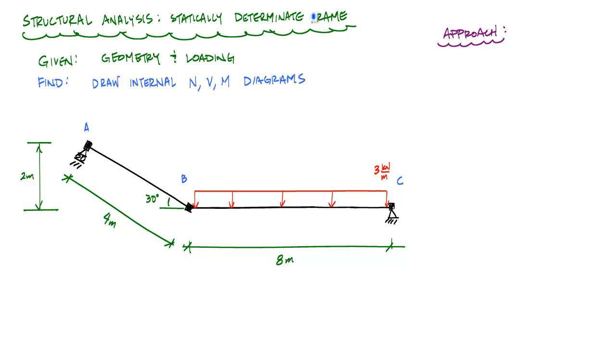When I say frame, I mean a structural system that has two or more members. For the geometry and loading given in this problem, I've got a roller support at A. Member AB is at an angle of 30 degrees. This connection at B is a moment connection, which means I can transfer axial, shear, and moment from one side to the other, as opposed to something like a hinge, which can only transfer axial and shear from one side to the other.